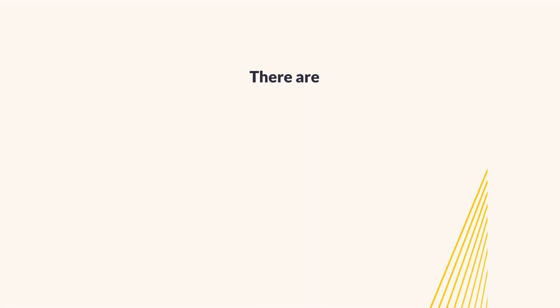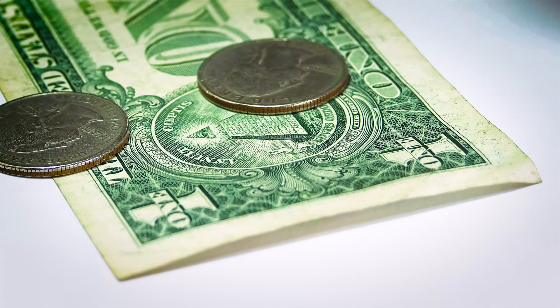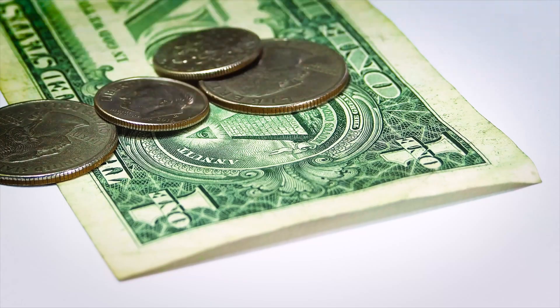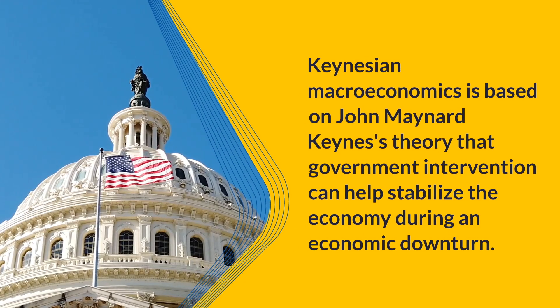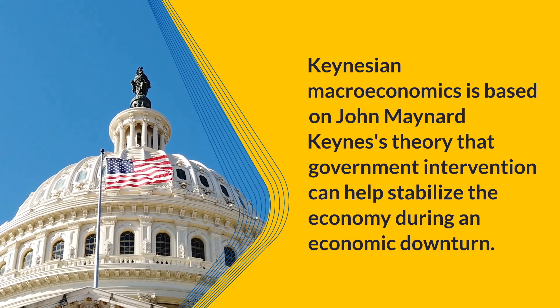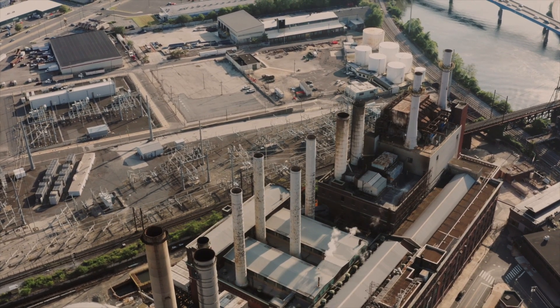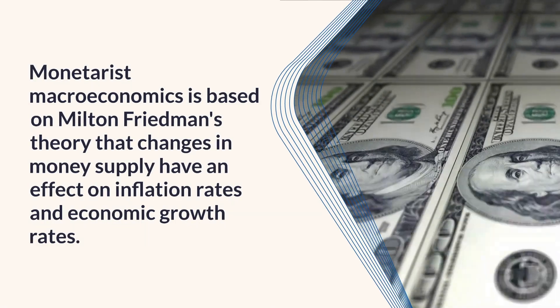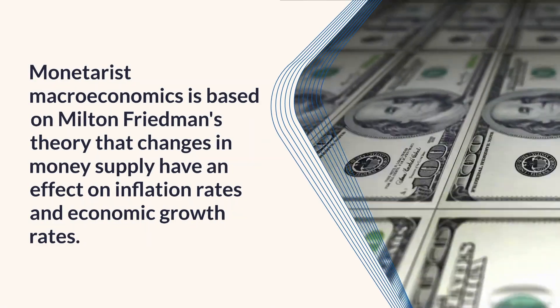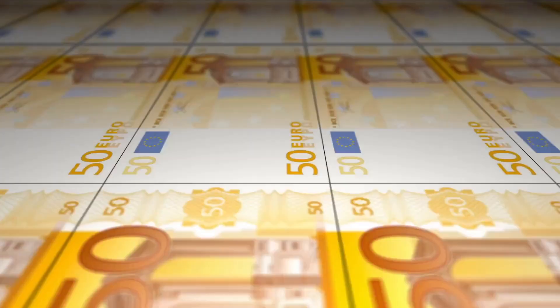There are three main types of macroeconomics: Keynesian economics, monetarist economics, and classical economics. Keynesian macroeconomics is based on John Maynard Keynes' theory that government intervention can help stabilize the economy during an economic downturn. Monetarist macroeconomics is based on Milton Friedman's theory that changes in money supply have an effect on inflation rates and economic growth rates.